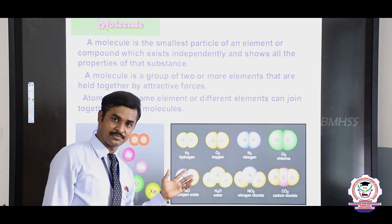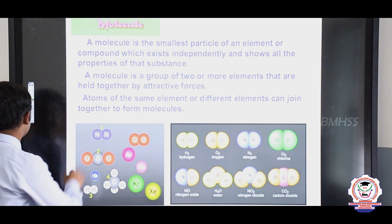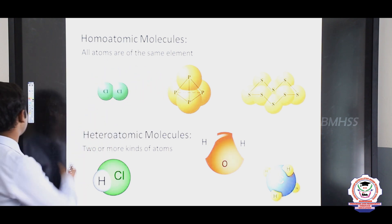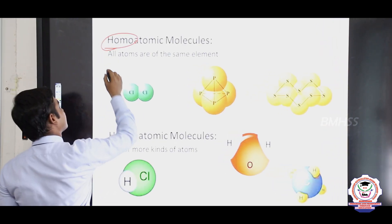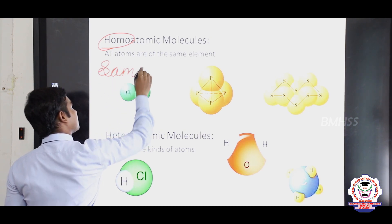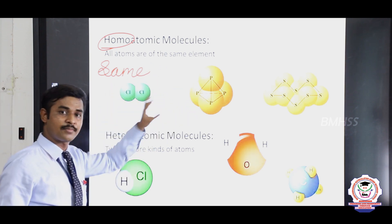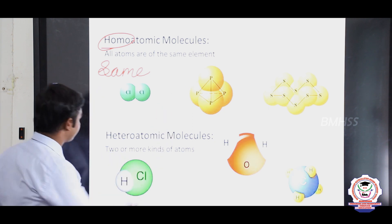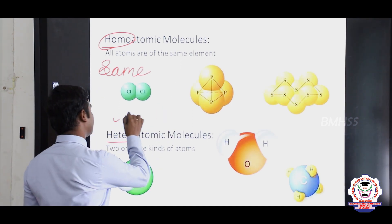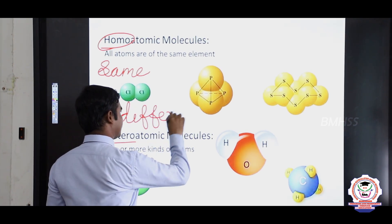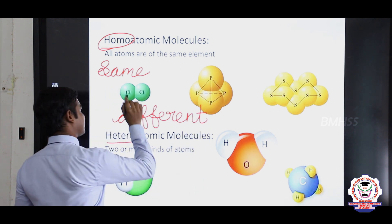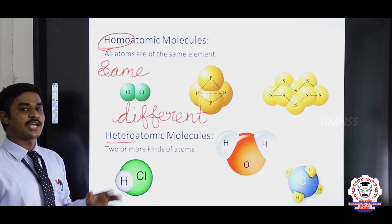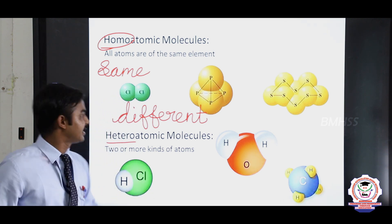Atoms of the same elements or atoms of different elements can join together to form molecules. For example, CO2 and N2 are molecules. The molecules may contain same elements like H2, or different elements like CO2. Molecules may be of two types: one is homoatomic molecules and another one is heteroatomic molecules. The word 'homo' represents 'same', so the same atoms forming a molecule is called a homoatomic molecule. The word 'hetero' represents 'different', so different types of atoms present in a molecule are called heteroatomic molecules.